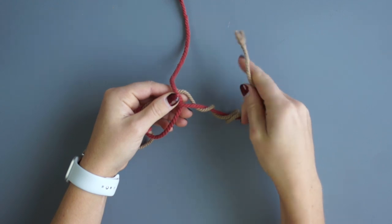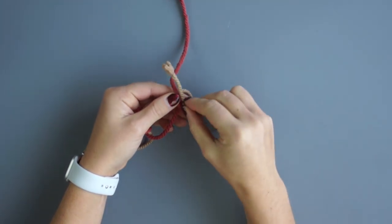Bring the end of the cappuccino rope through the intersection in the opposite direction of the red rope.